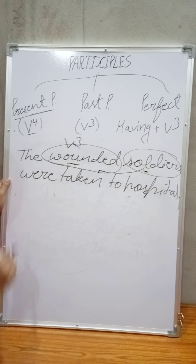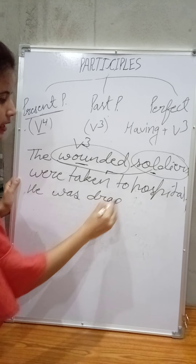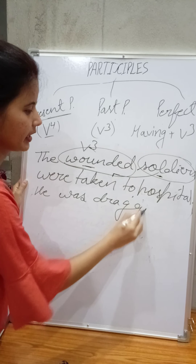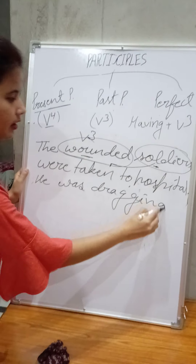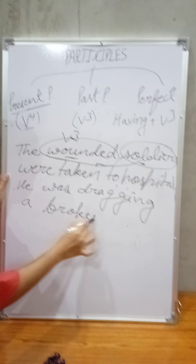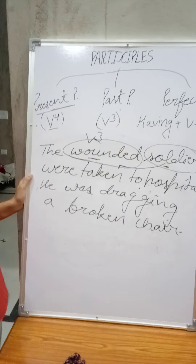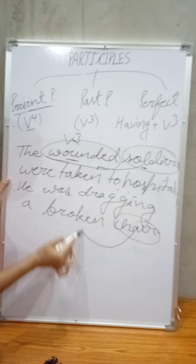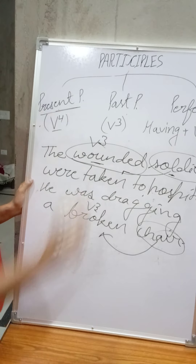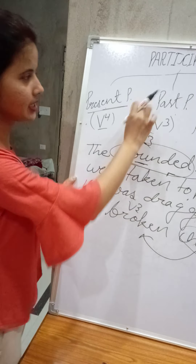Look at another example: he was dragging a broken chair. What is the noun here? Chair. And what kind of chair? Broken — so this is V3, and this V3 is describing the noun 'chair.' So it will be called past participle here.